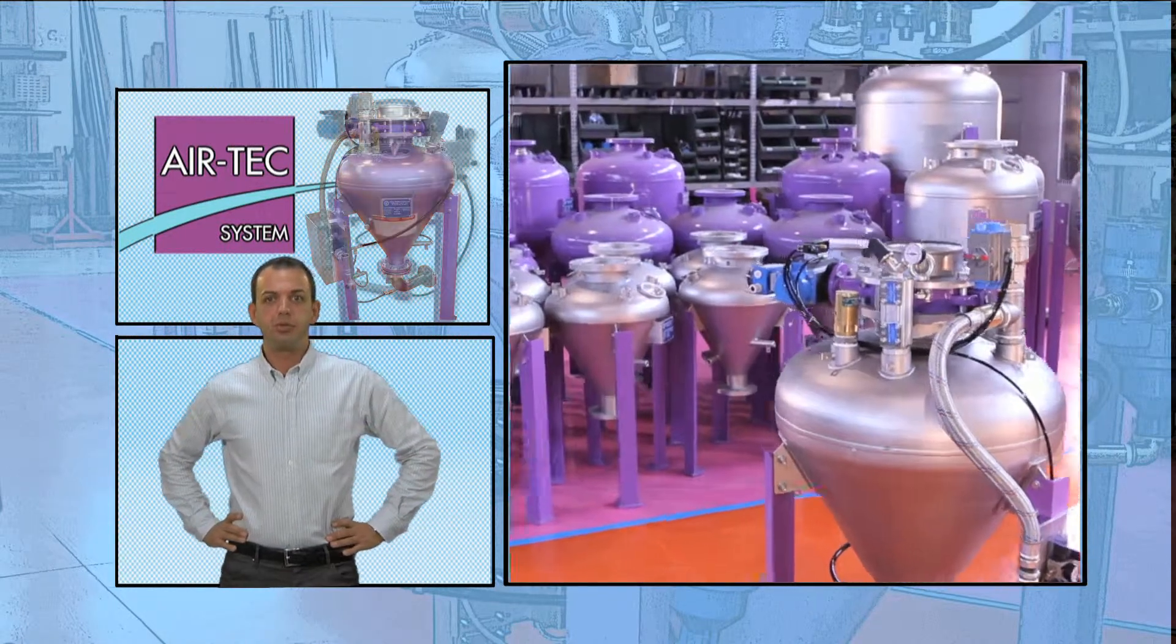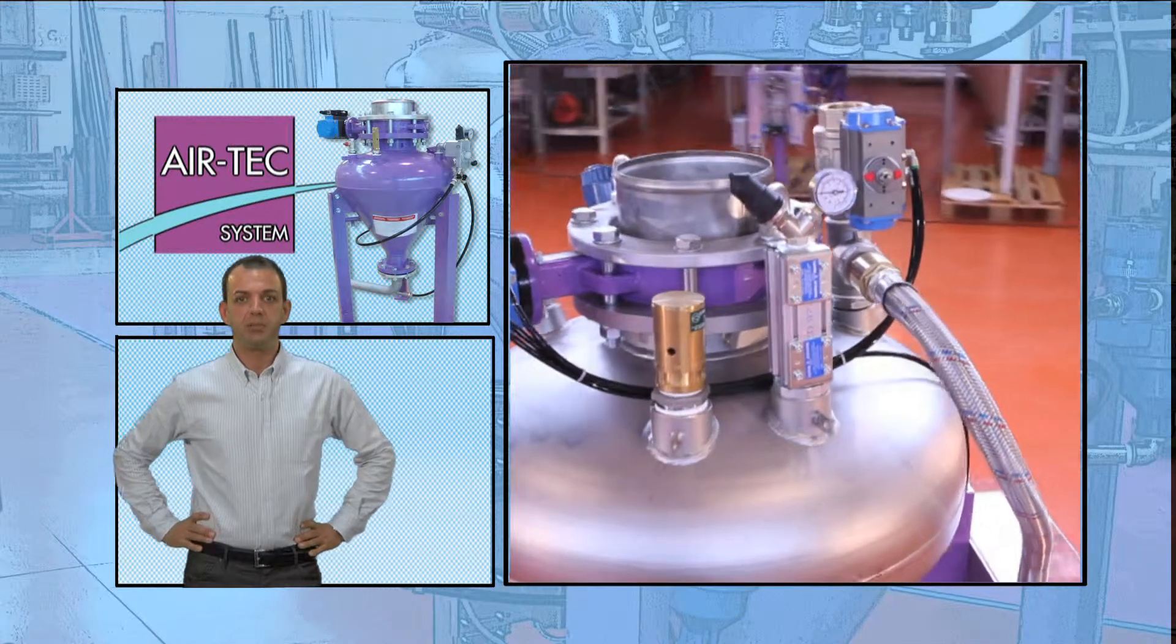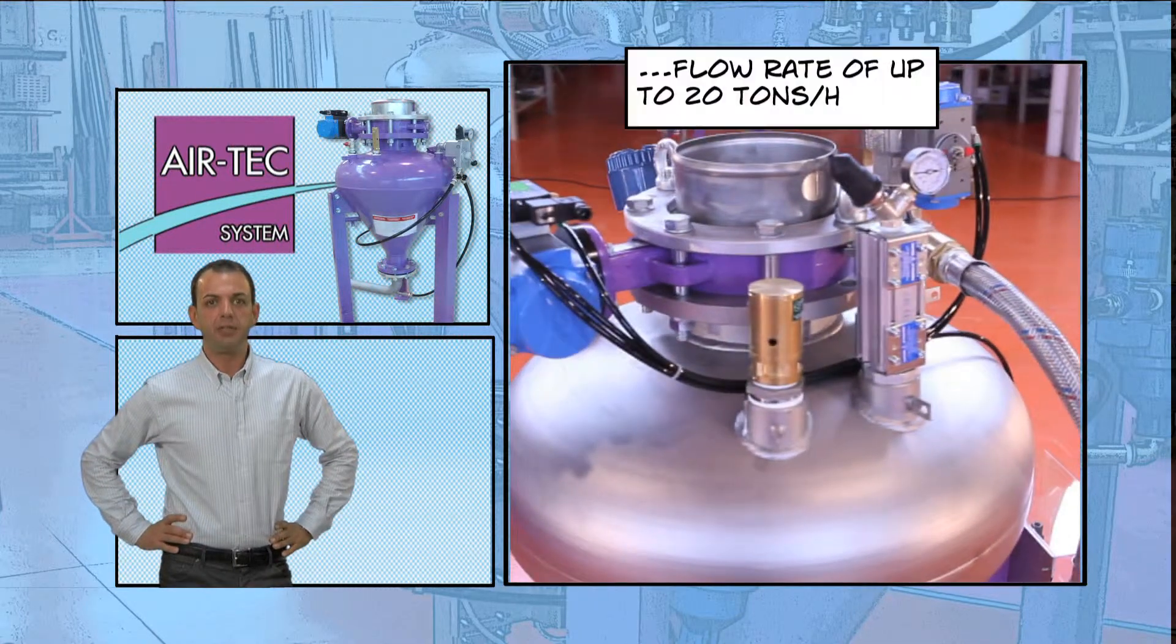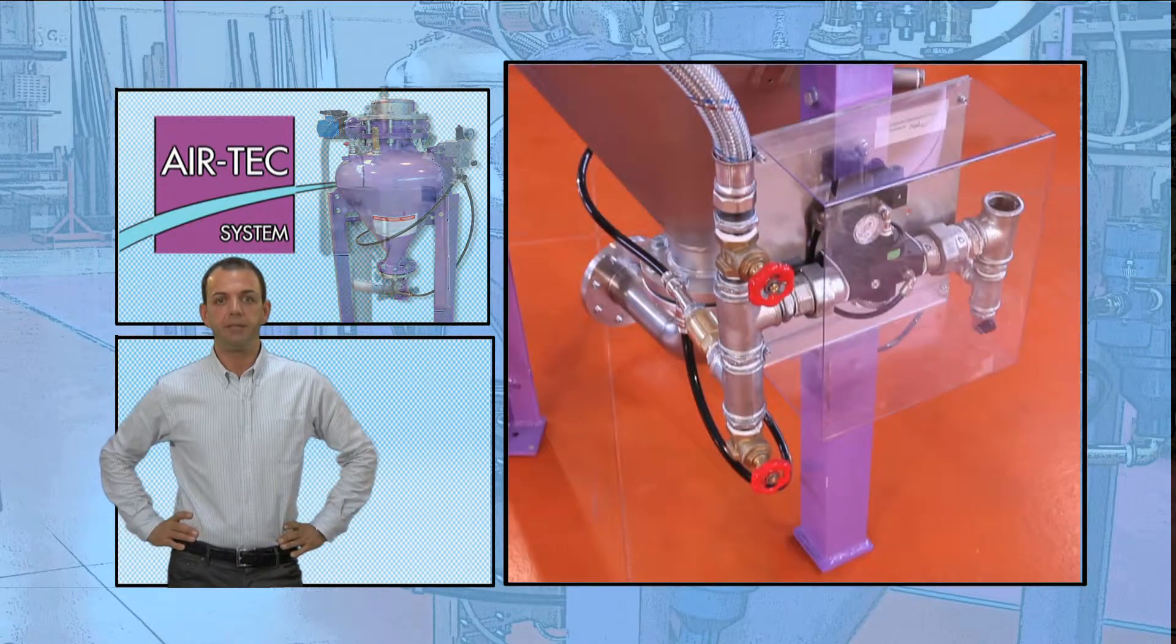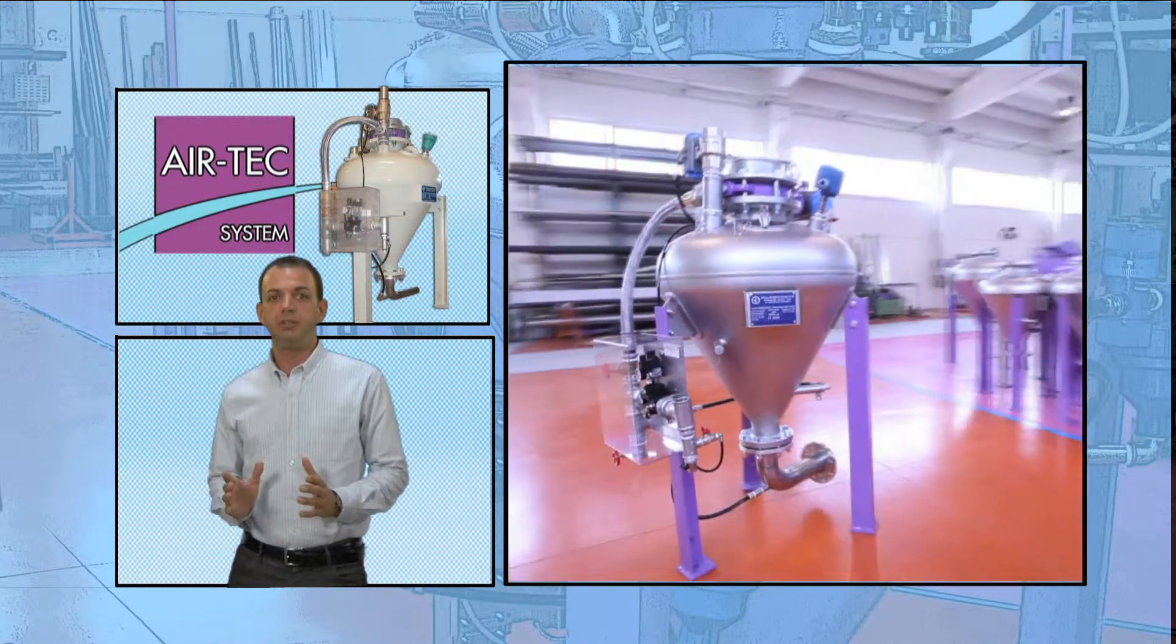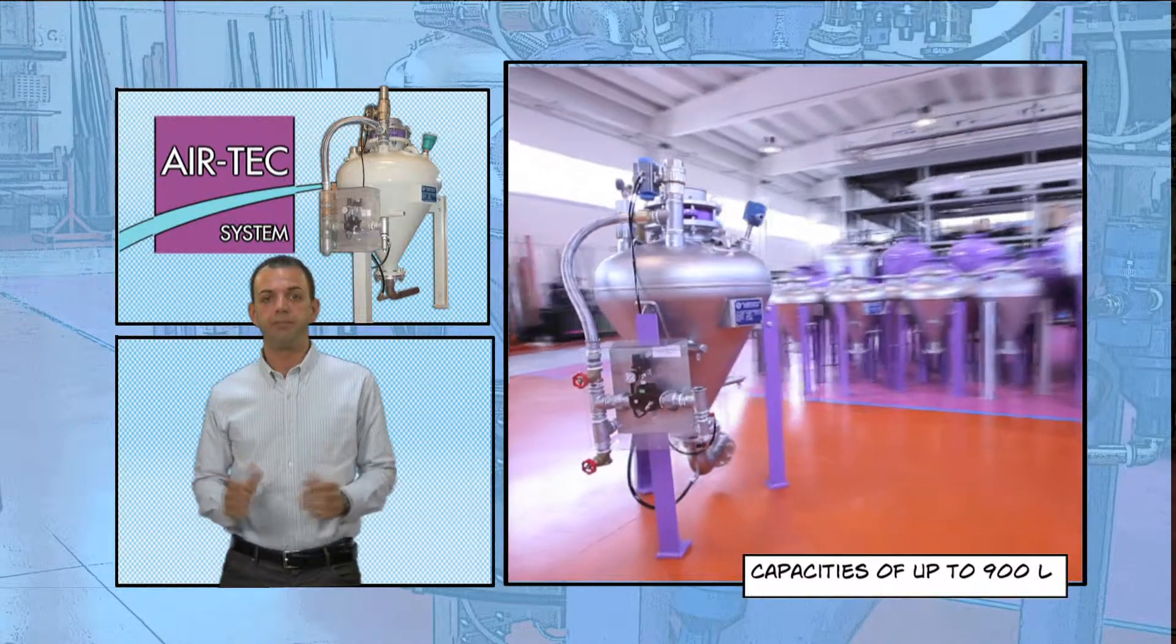BART 1 vessels are standard products designed for medium transport lengths with a flow rate of 20 tons per hour, depending on transport length and material type. A wide range of capacities of up to 900 litres is available.